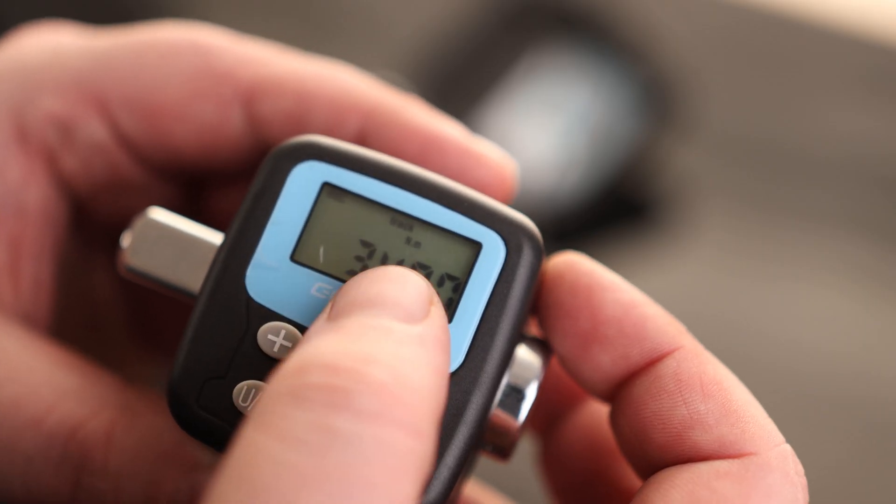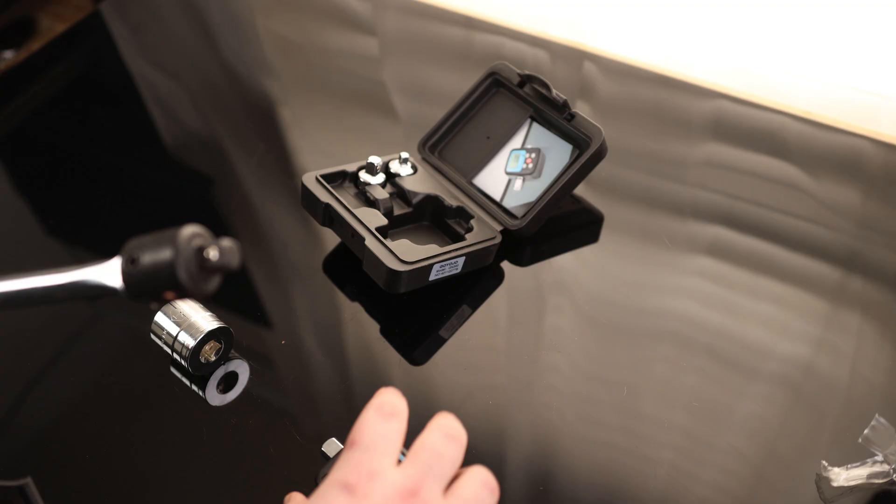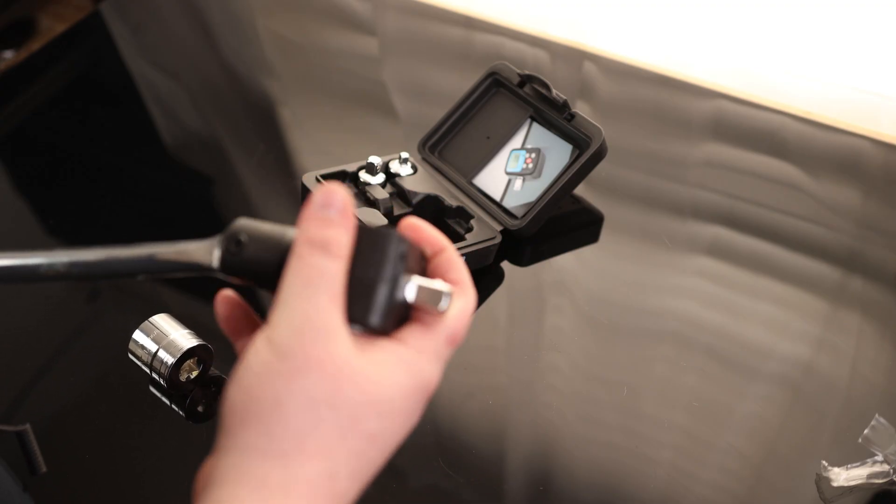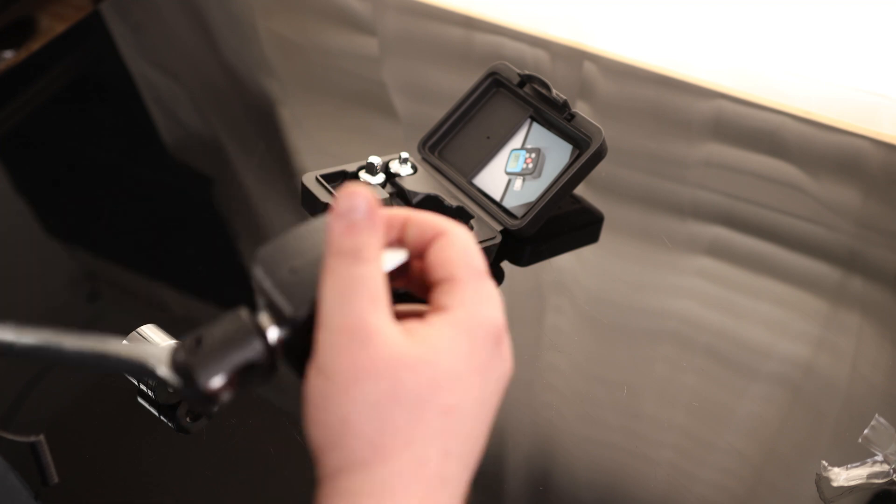Right off the bat, it tells us the maximum in Newton meters that we can actually push this. And what's great about this is we can take any ratchet or breaker bar and turn that into a torque wrench.